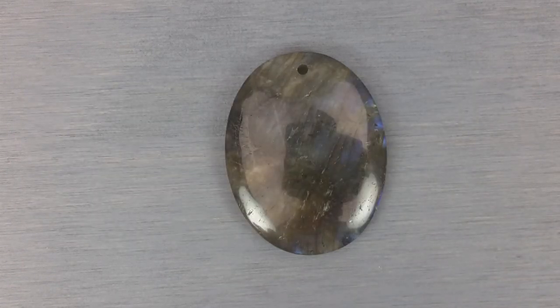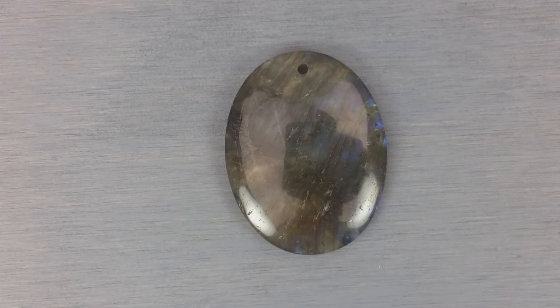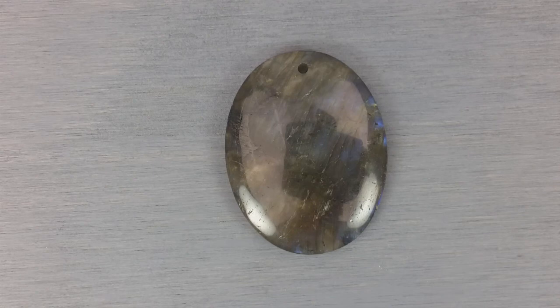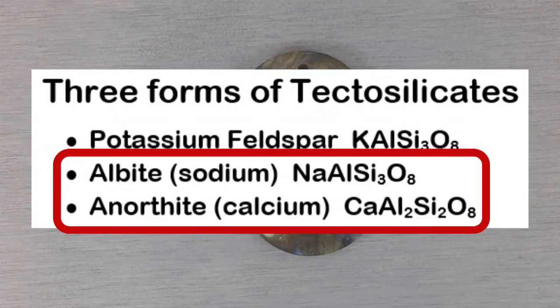Among feldspars there's a smaller group known as plagioclase minerals, and Labradorite is one of these. Plagioclase minerals are a mix of about 30 to 50 percent albite and 50 to 70 percent anorthite, meaning they're a mix of that sodium and calcium form.